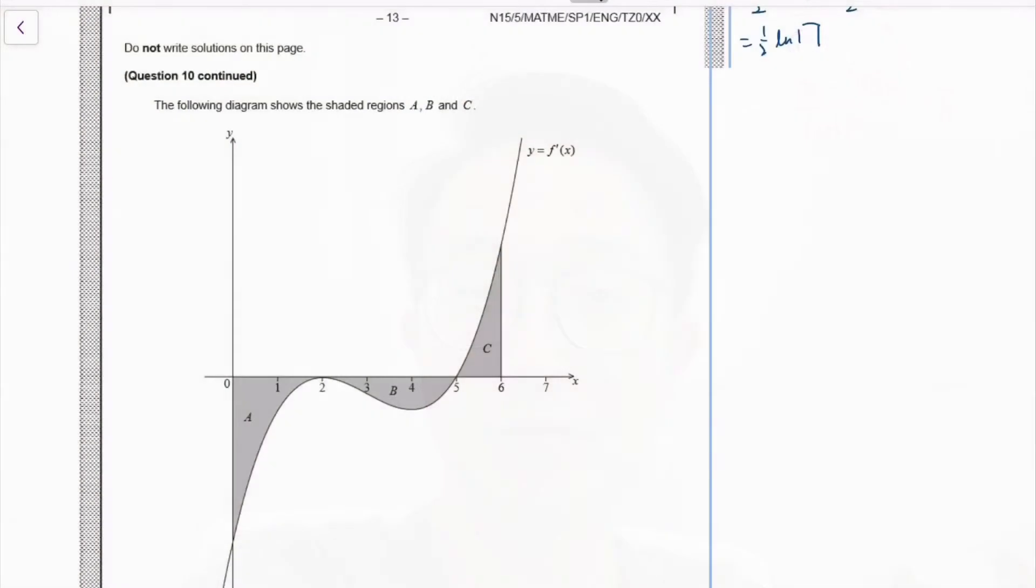Enjoy! This is actually quite a tricky question. This is 2015, section B question 10, so the last question of the paper, so it's supposed to be hard. There is a part A and B before this, but what you do there is not relevant to what we need to do.